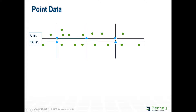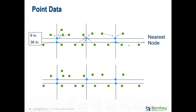The green lines represent billing records and the blue dots represent your manholes. There are different ways to assign data — either to the nearest node or to the nearest pipe. When we say nearest pipe, the flows aren't assigned to the pipe itself; it finds the nearest pipe and then locates the closest manhole, so it's assigned to the manhole anyway, just taking a different path.